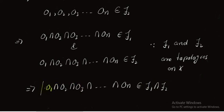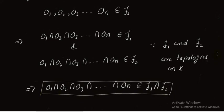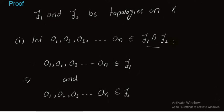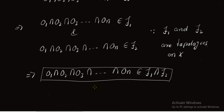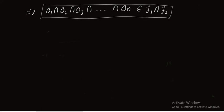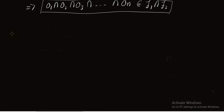So we have proved that the first condition for the topology is satisfied. We chose finite elements from τ1 ∩ τ2 and proved that the intersection of these elements again belongs to τ1 ∩ τ2. So the first condition for the topology is satisfied. Now we move to the second condition, in which we prove that the arbitrary union of members of τ1 ∩ τ2 belongs to τ1 ∩ τ2.